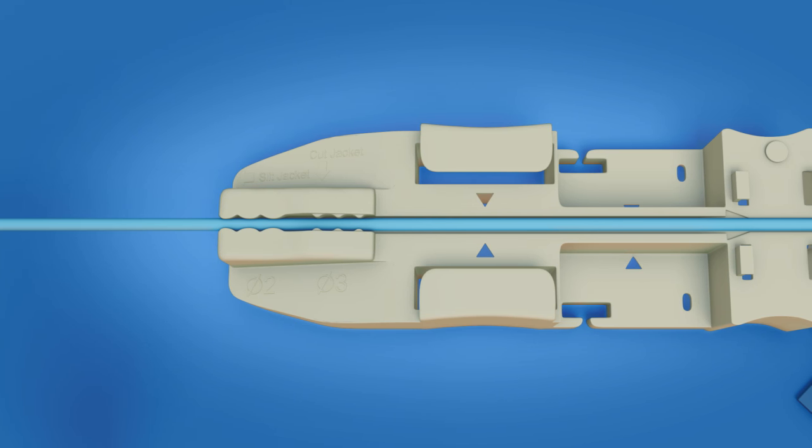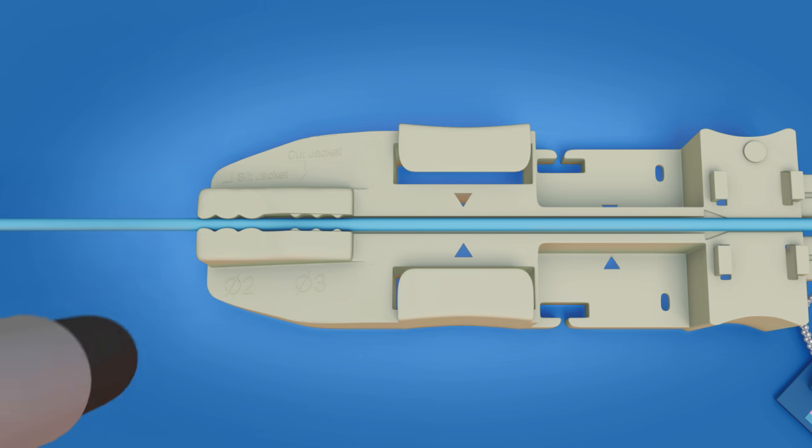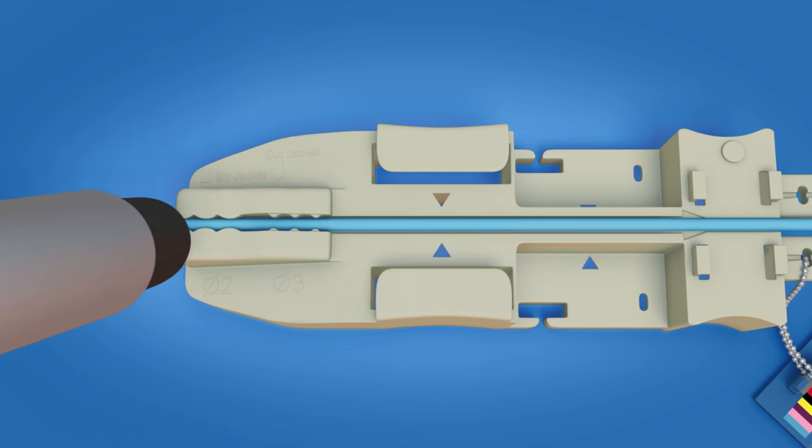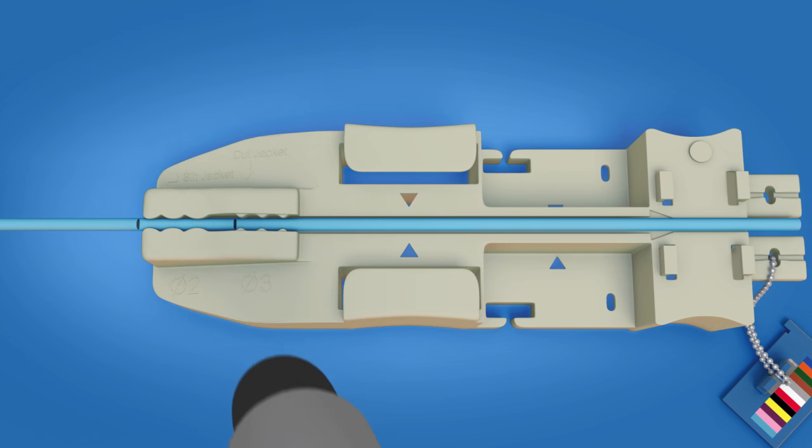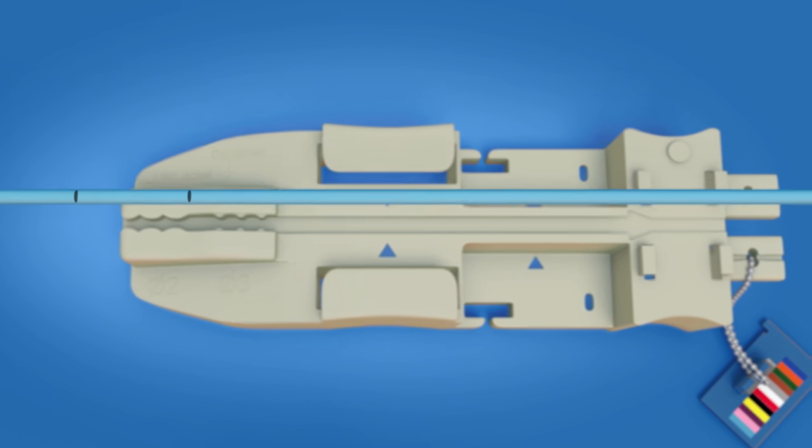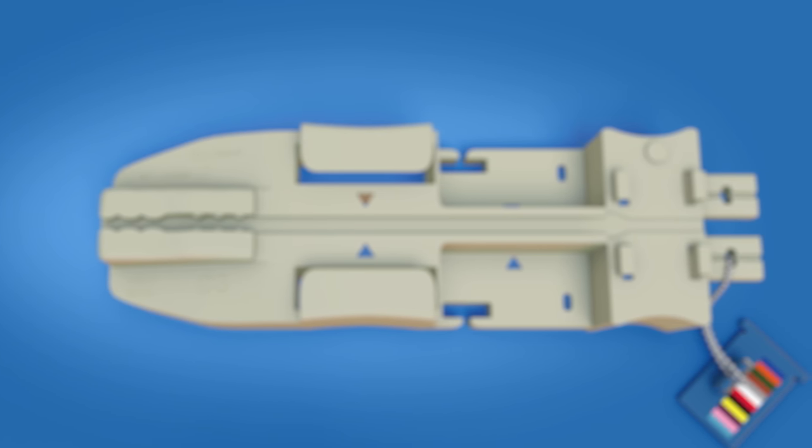Place the cordage into the ribbonizing tool. Make two marks on the jacket where the slit jacket and cut jacket arrows are pointing. Remove the cable from the ribbonizing tool after marking the jacket.